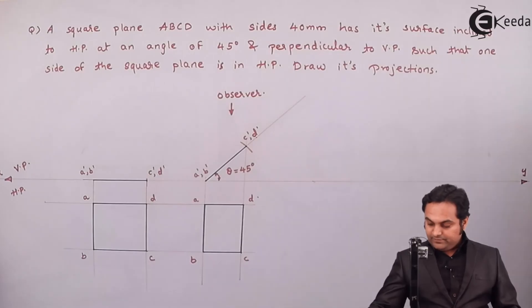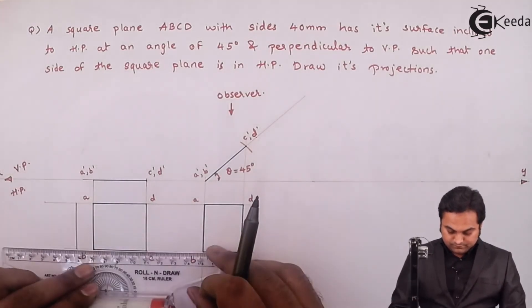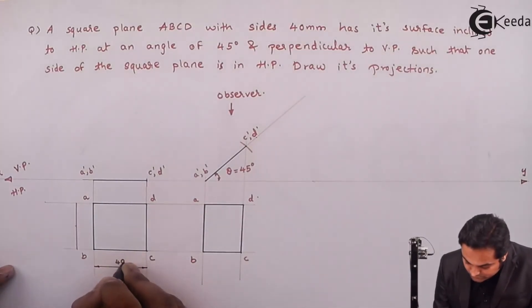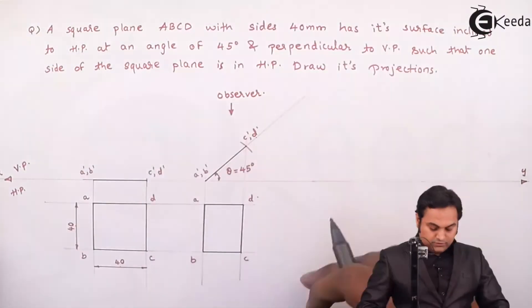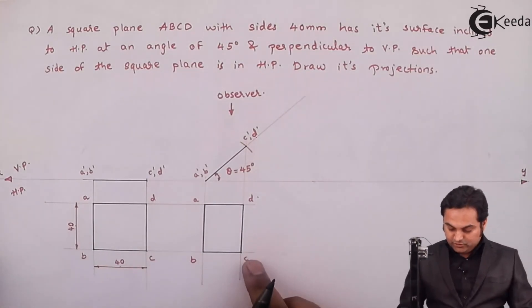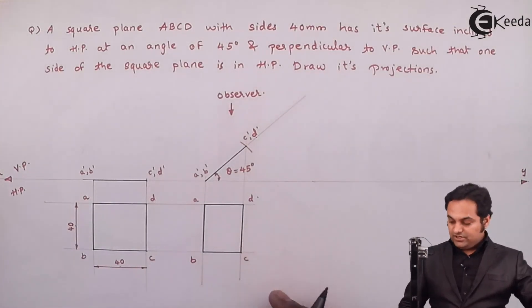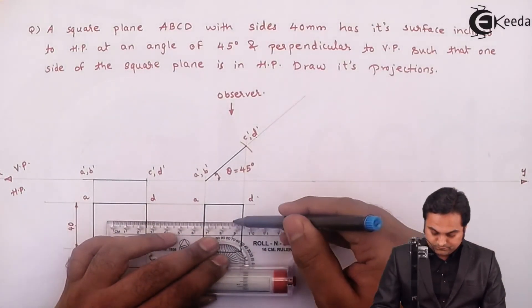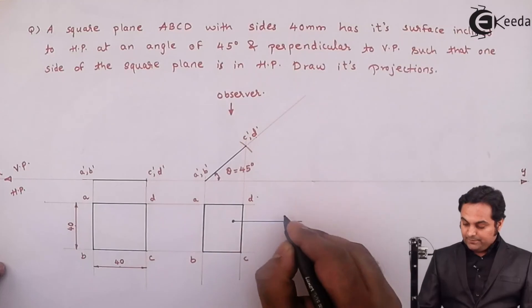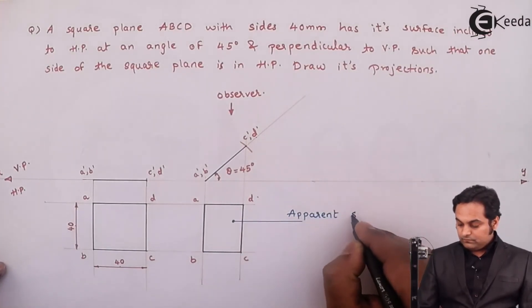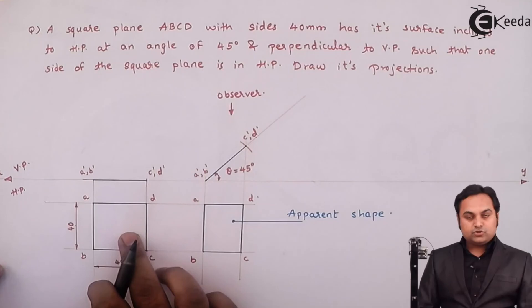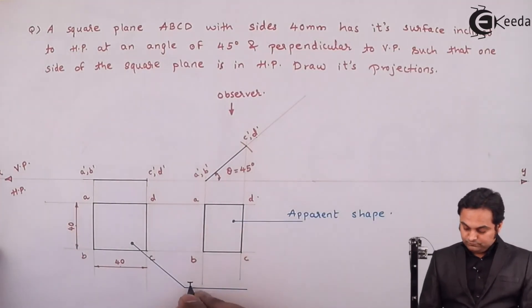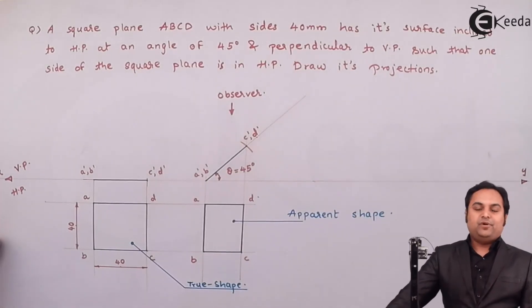After completing it up till here, I will give the dimension: square of 40mm side, now it has become a rectangular plane, and this shape is called the apparent shape. And here this square is the true shape. And with this we complete the problem.